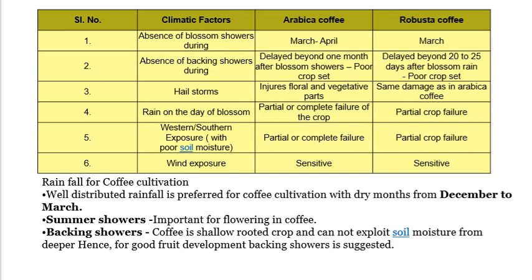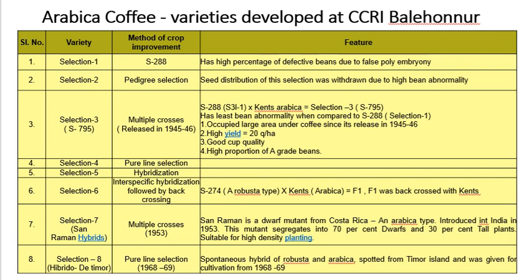Both species are sensitive to wind. Well-distributed rainfall is preferred for coffee cultivation, with dry months from December to March. Summer showers are important for flowering in coffee, and backing showers are important because coffee is a shallow-rooted crop that cannot exploit soil moisture from deeper layers; hence backing showers are essential for good fruit development. Now, regarding varieties of coffee arabica.